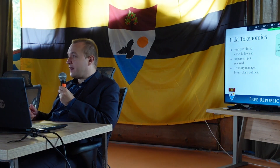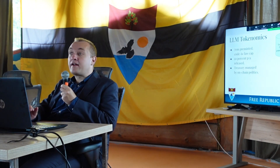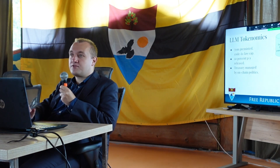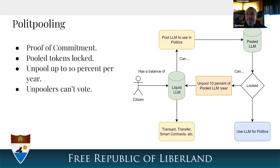The closer you are to the ideal stake ratio of 75%, the more you receive — at that ratio you get everything. Then there is the state treasury, managed by politicians you vote for using LLM. They can use it to run Liberland, award supporters, and issue grants for builders — similar to the Web3 Foundation model — managed by on-chain politics, which is being built now.